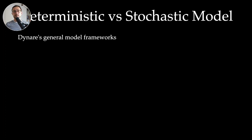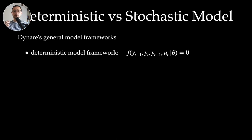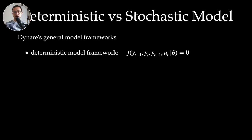Whenever you enter a mod file in Dynare, Dynare transforms your model into a very general model framework where the endogenous variables only have one lead and one lag — so only t minus 1, t, or t plus 1 variables. If you have a model with more leads and lags, the preprocessor will take care of all the transformations needed. We have endogenous variables y, exogenous variables u, and parameters theta. The nonlinear model equations are denoted with f.